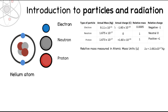Now looking at the charges: an electron has a negative charge, the neutron has no charge, and the proton has a positive charge. The actual charge on an electron in coulombs is minus 1.6 times 10 to the minus 19, and for a proton it's exactly the same but positive - positive 1.6 times 10 to the minus 19. They are both the exact same magnitude, just opposite in sign.